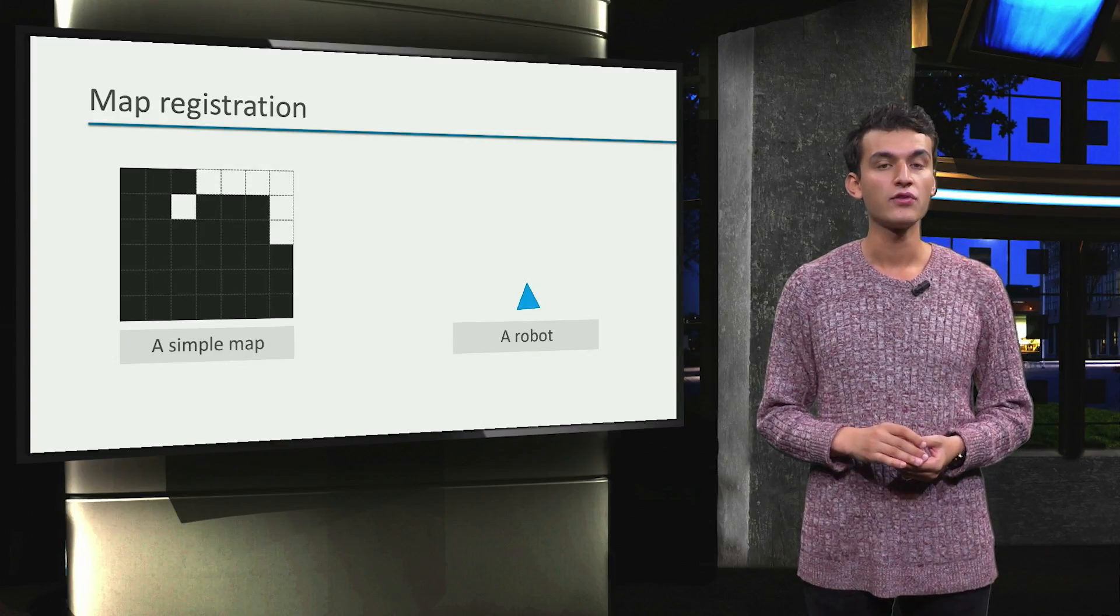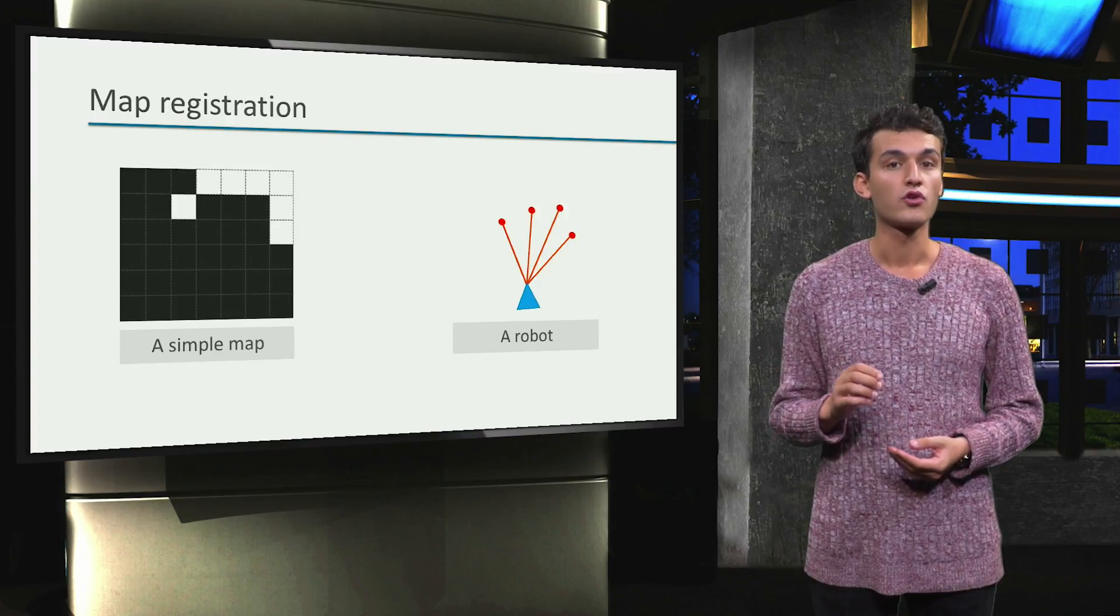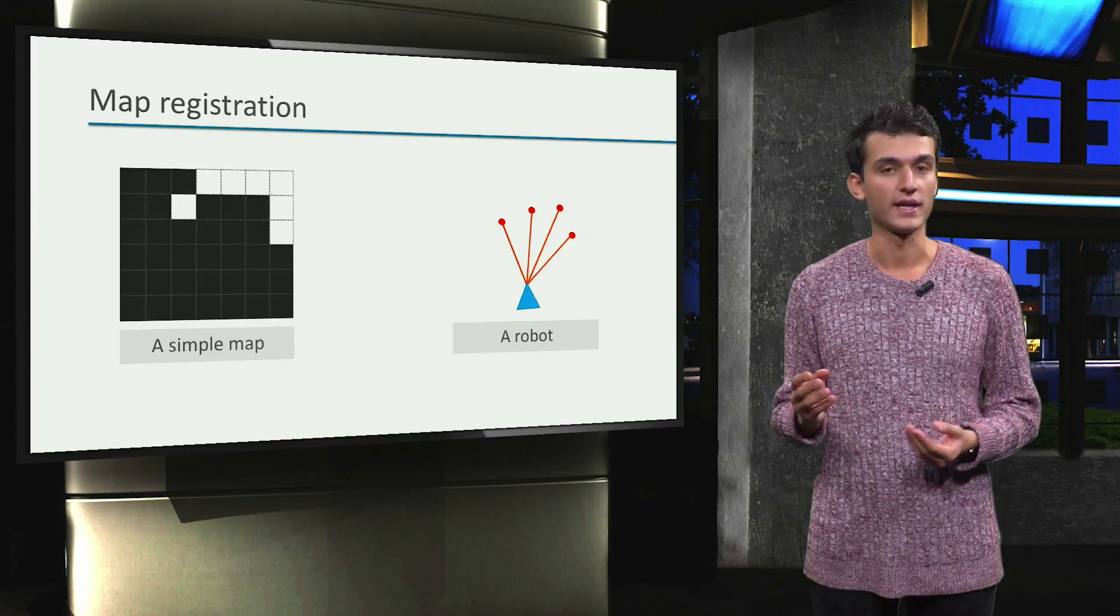The robot will use a laser scan to gather information about its surroundings. The robot measures few obstacles which we can detect.